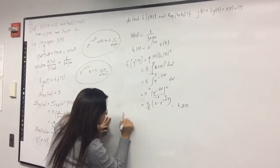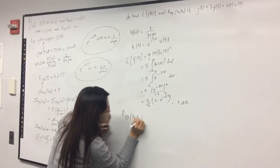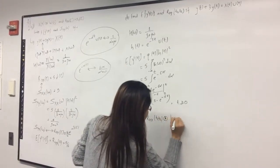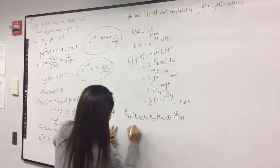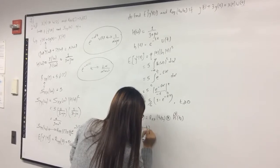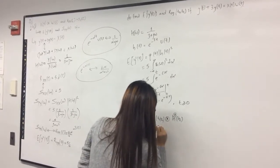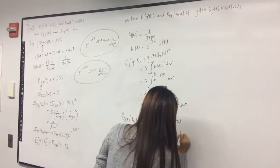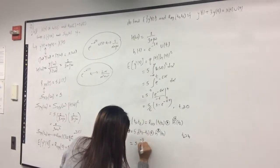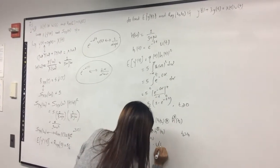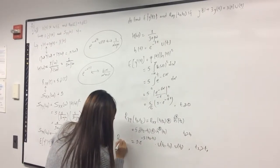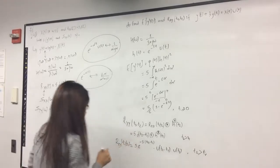The cross-correlation R_xy(t1, t2) can be represented as R_xx(t1, t2) convolved with h(t2). Substituting R_xx(t1, t2) = 5δ(t2 − t1) and convolving with h(t2), and considering that t2 > t1, we get R_xy(t1, t2) = 5e^(−3(t2 − t1)) u(t2 − t1) u(t1), valid for t2 > t1.